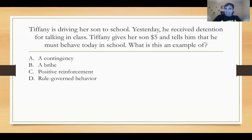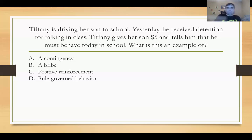This is bribery. When you reverse that contingency and you deliver reinforcement and then tell them what they must do, you're now bribing. They already received the reinforcement — they've already received the item. What's the motivation to work? What's the motivation to behave? He's already got the five dollars. So this is not a contingency; this is a bribe.